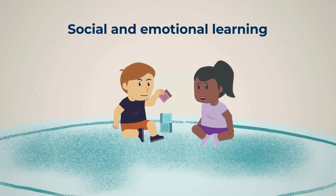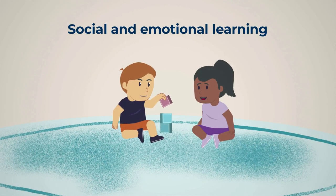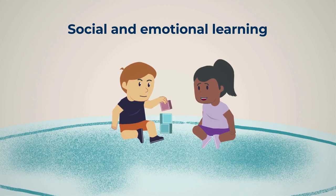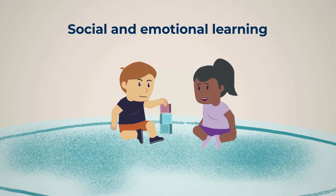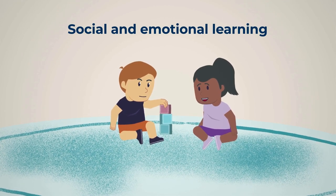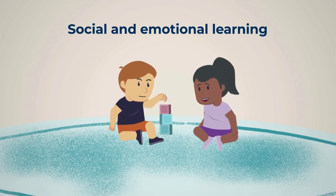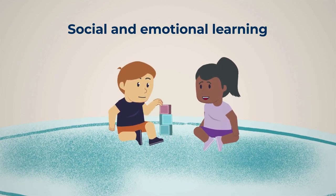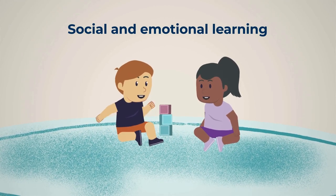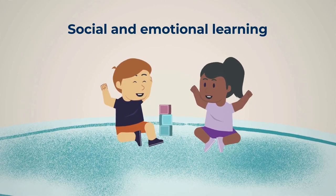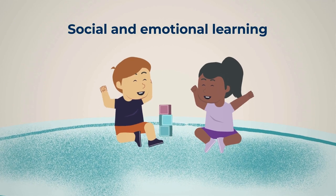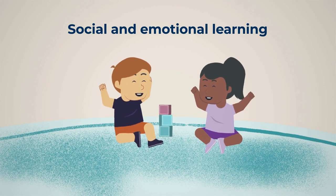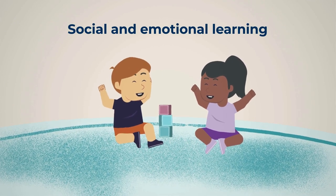Social and emotional learning includes skills such as children learning to recognise and separate their own needs from others, learning to identify and manage emotions, and building and maintaining positive relationships.